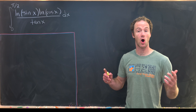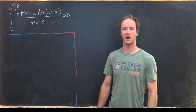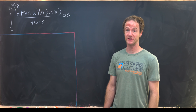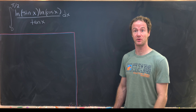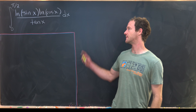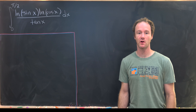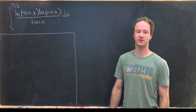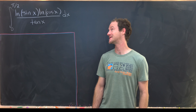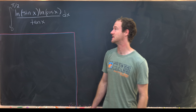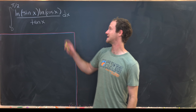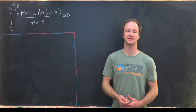Here we've got a classic hard integral problem — we're going to evaluate an integral that looks pretty gnarly. We have the integral from 0 to π/2 of the natural log of sine of x times the natural log of cosine of x over tangent of x dx.